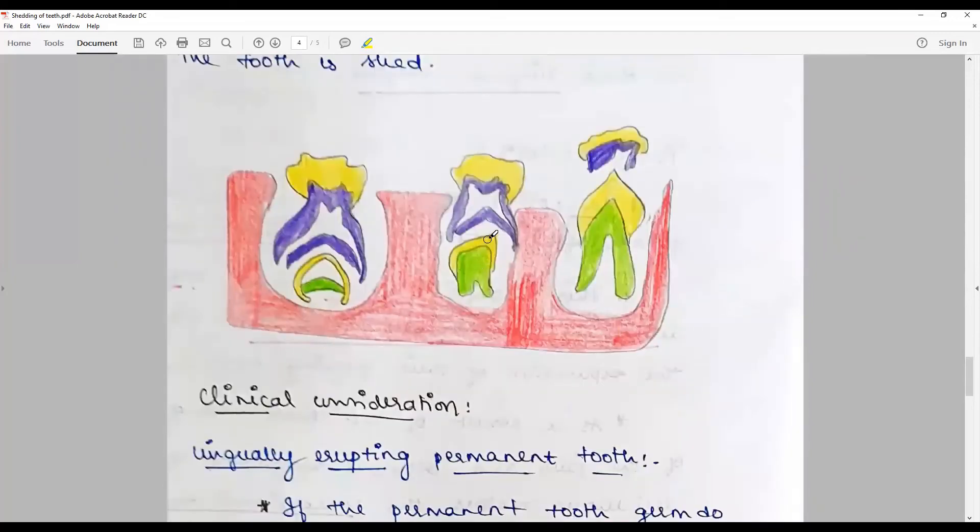Therefore, the pattern is slightly mesial and between the radicals, between the roots of the deciduous molars.